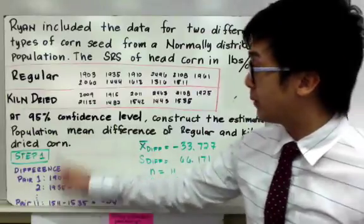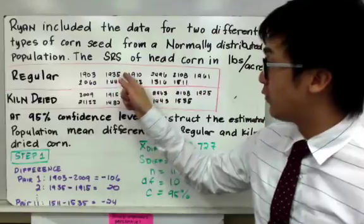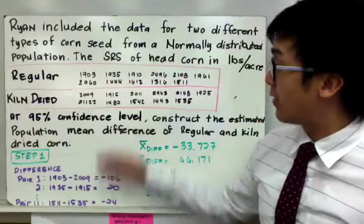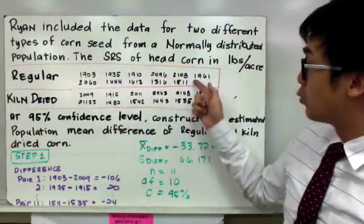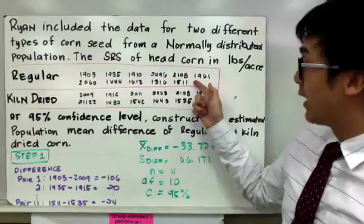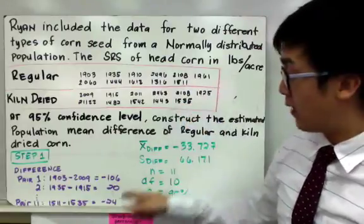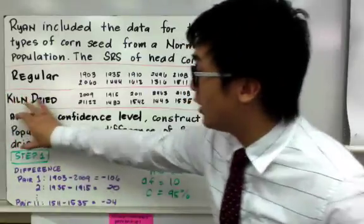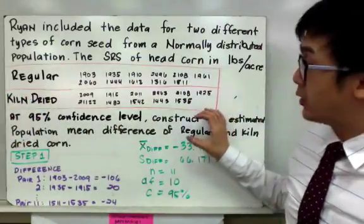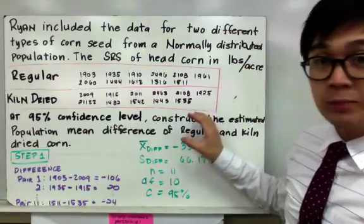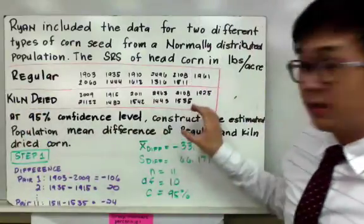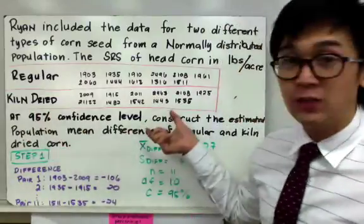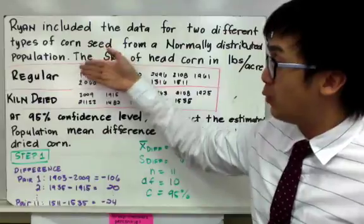And for your second set, it will be 1935 minus 1915 which gives you 20. And then you do it up until the last pair which is 1511 minus 1535 which gives you a difference of negative 24. Now you'll have a third sample in your distribution and you're going to be concentrating on computing for the third sample which is the mean and the standard deviation of sample A or the differences of sample one and sample two.